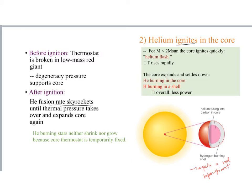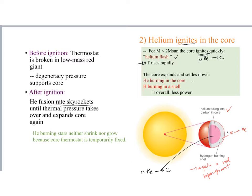Now helium is fusing into carbon in the core, and hydrogen continues to fuse into helium in a shell. So we have hydrogen going into helium in the shell, and in the core we have helium — three nuclei at a time — going into carbon. Remember, we need four hydrogen nuclei to create helium, and that happens in the shell. When that happens — that ignition of helium into carbon — it happens quickly, and that moment is called the helium flash. The temperature rises rapidly, and you have that double burning situation.